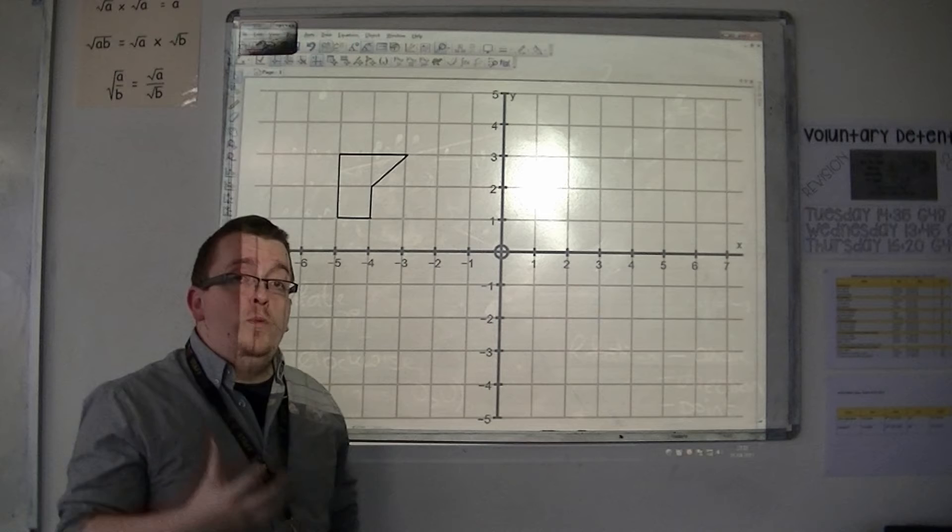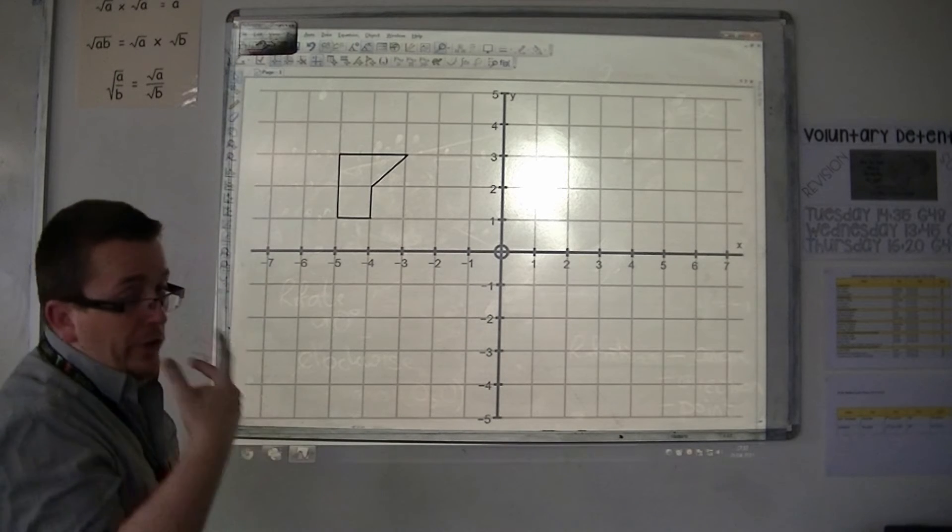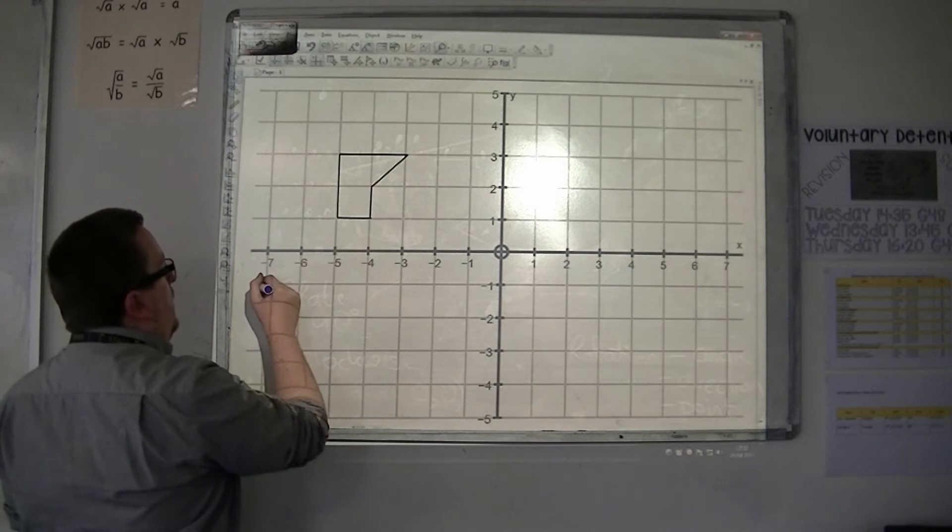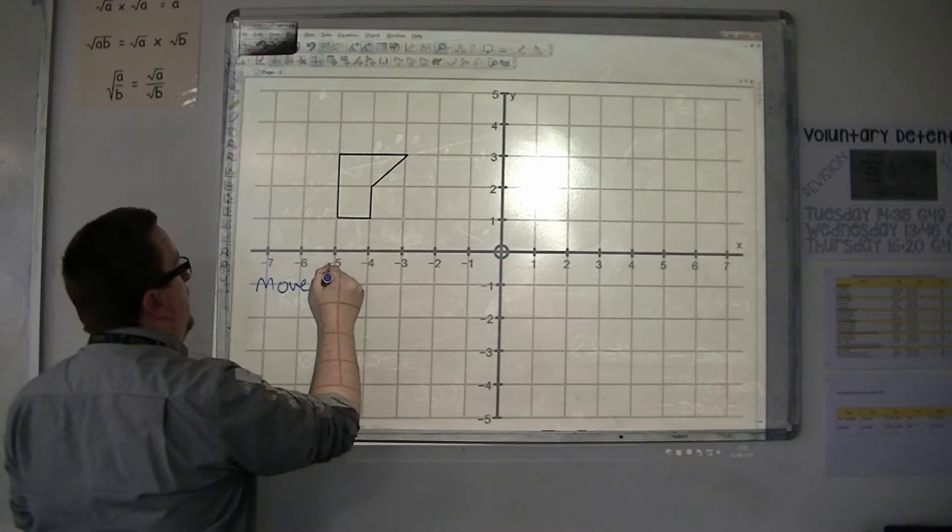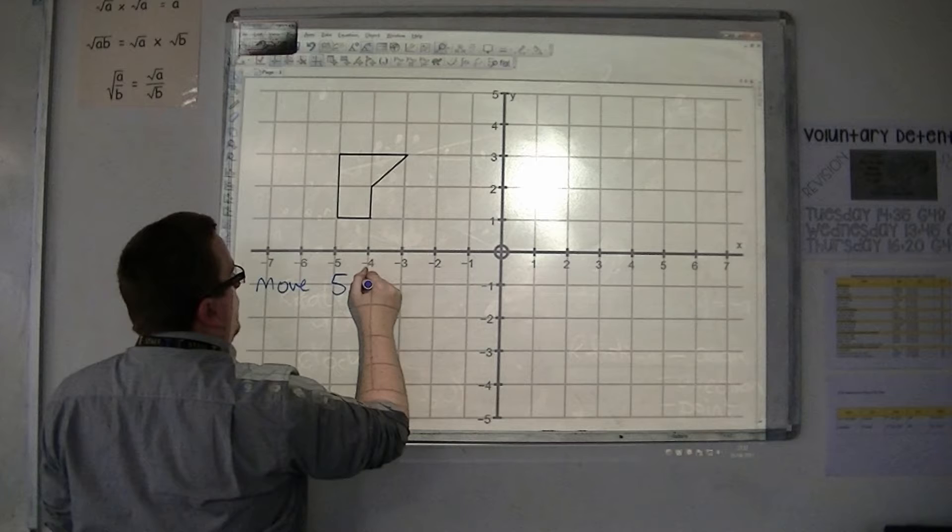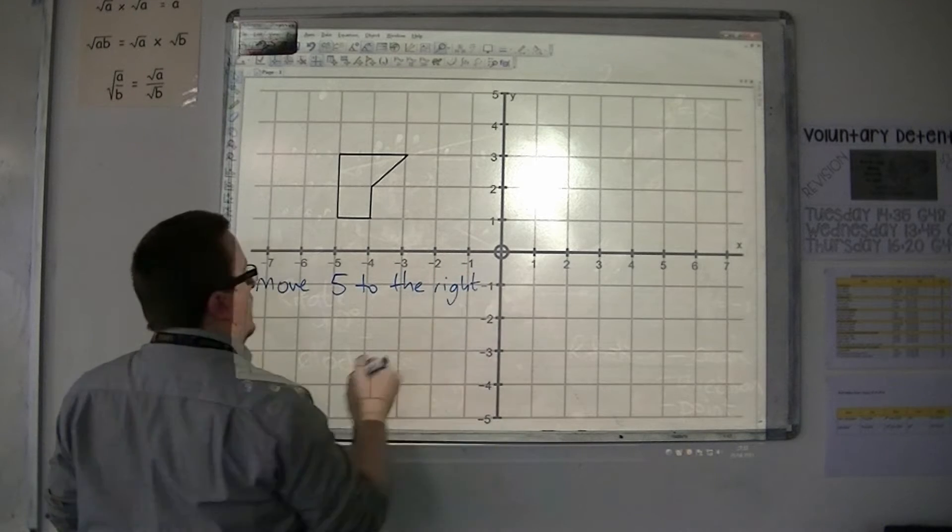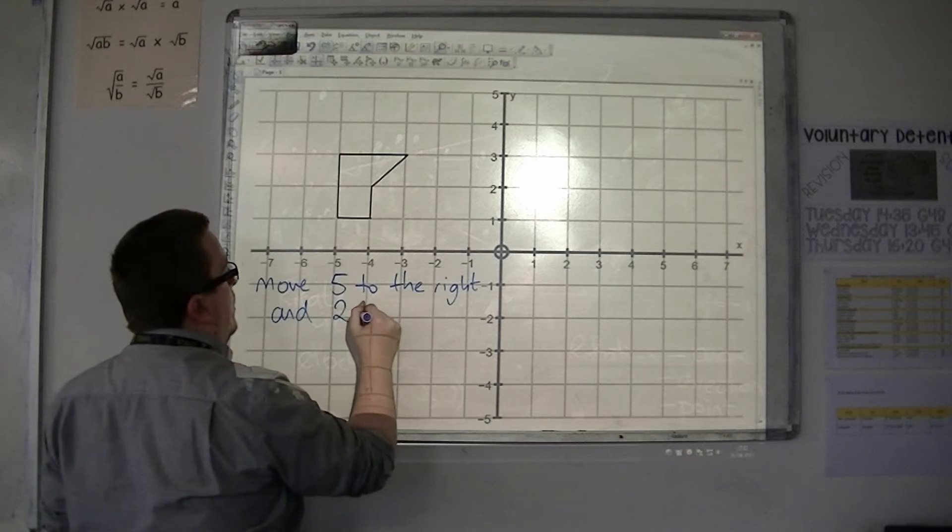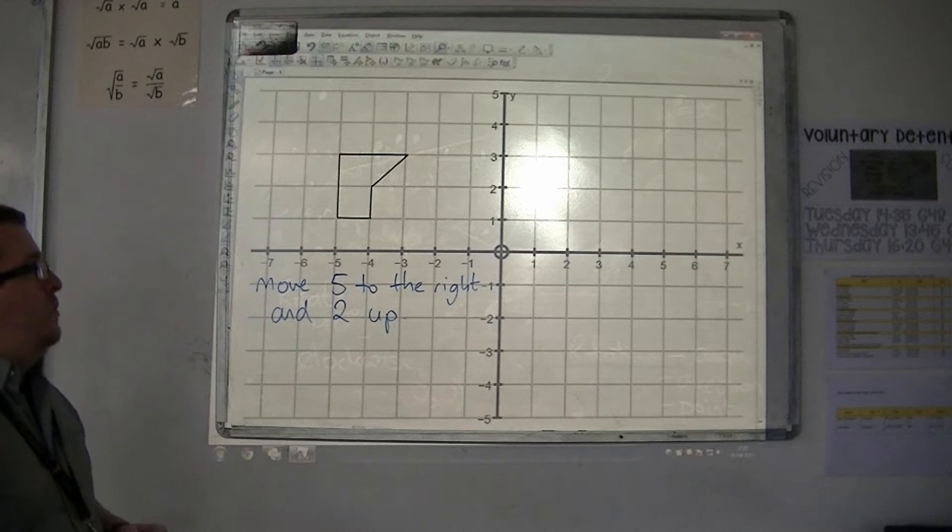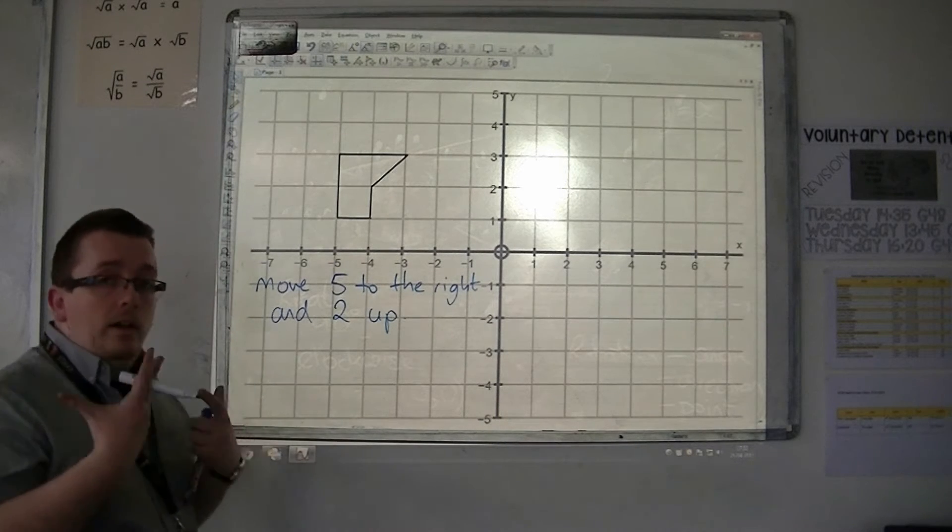Now the key is in how we describe that movement. You can do that in one of two different ways. You can either say that, for example, I'm going to move the shape. Let's say five to the right and two up. So move five to the right and two up. That's a perfectly valid way of describing a translation.